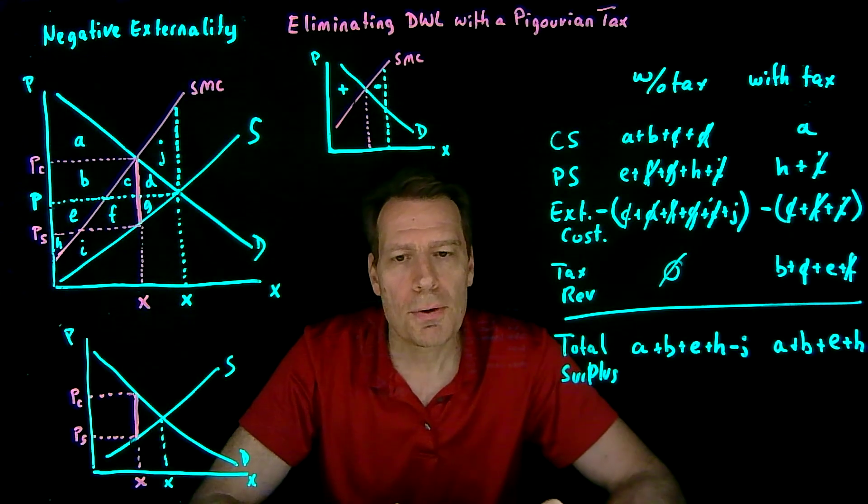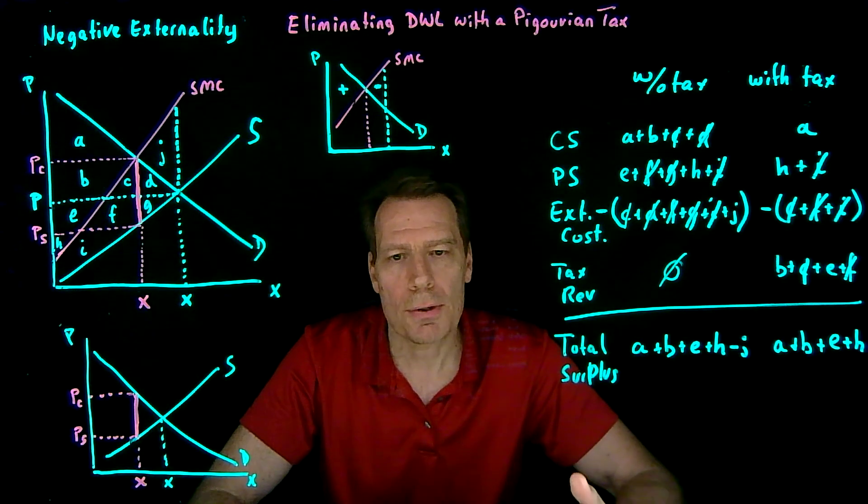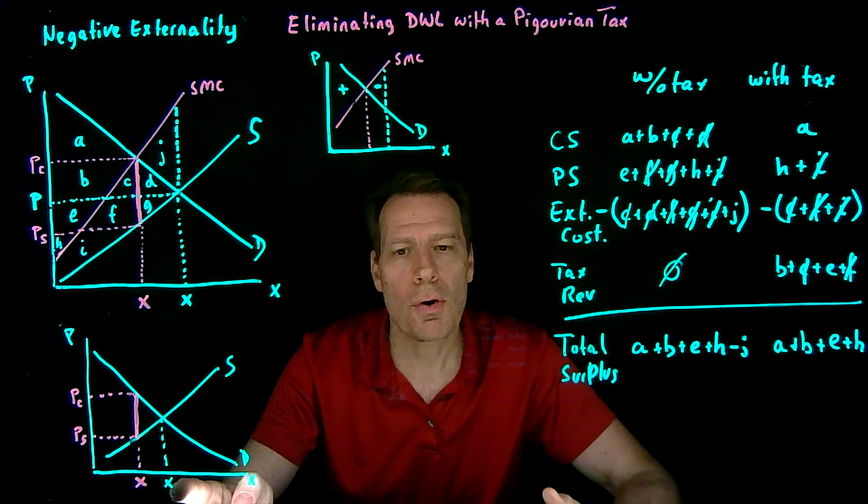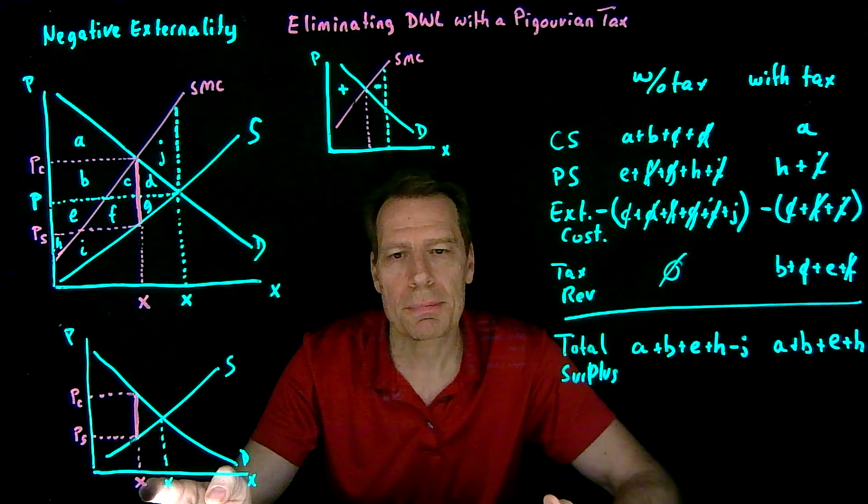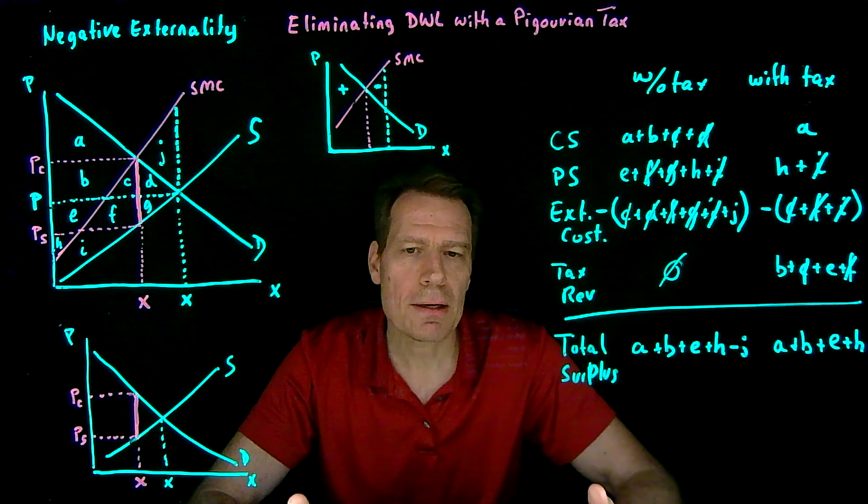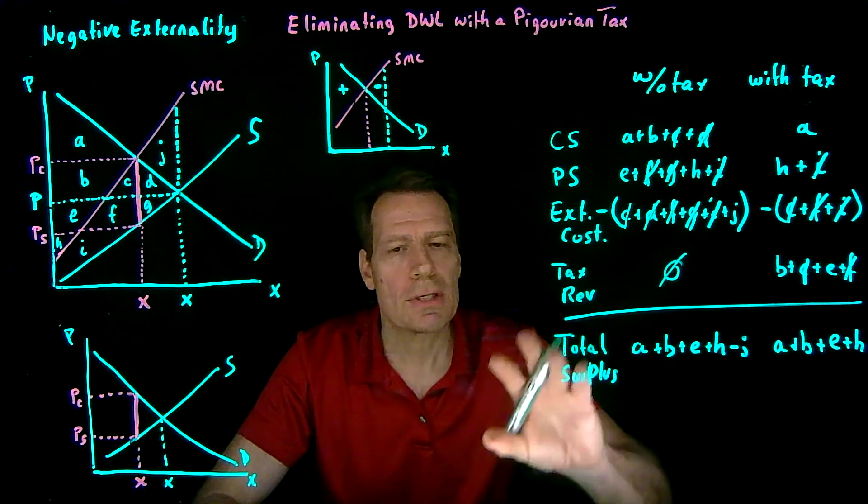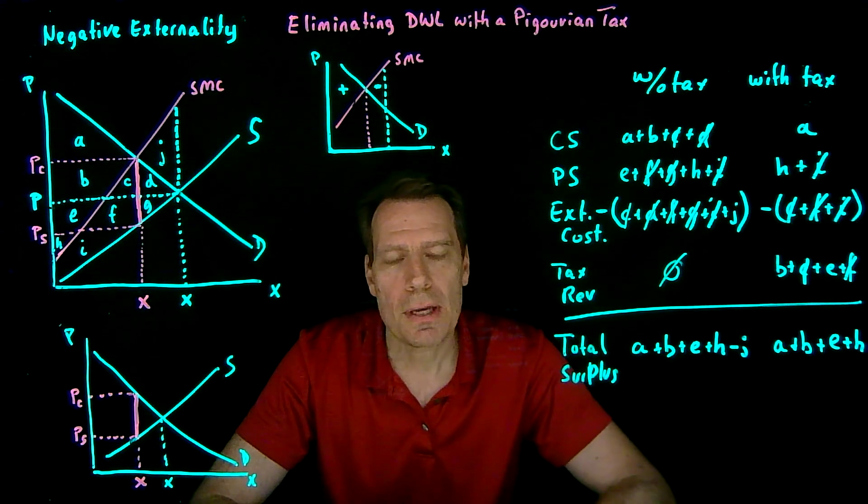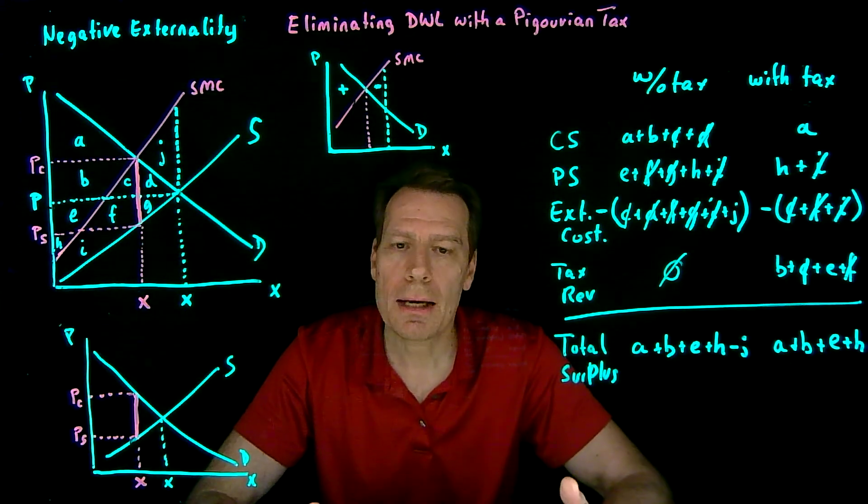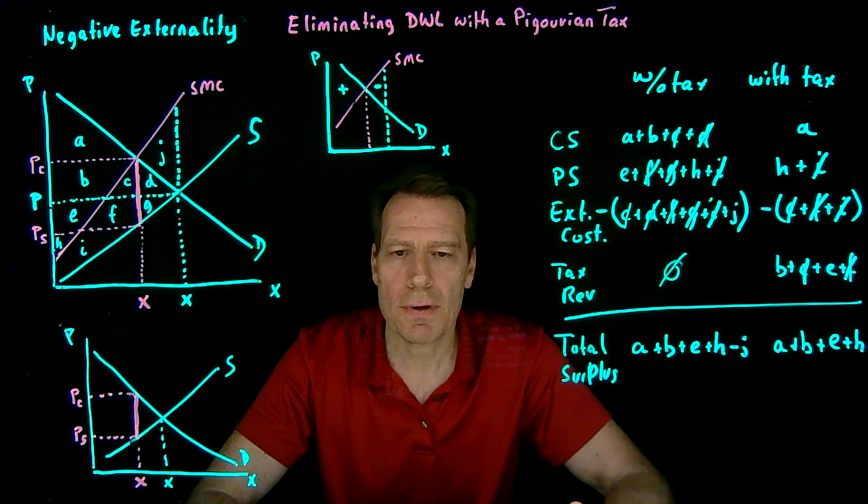So the Pigouvian tax then eliminates the deadweight loss by causing the market to correct its overproduction and produce the optimal quantity once again. Now you can do the same thing for Pigouvian subsidies, go through the same exercise, and show that the Pigouvian subsidy eliminates the deadweight loss from the underproduction under positive externality.